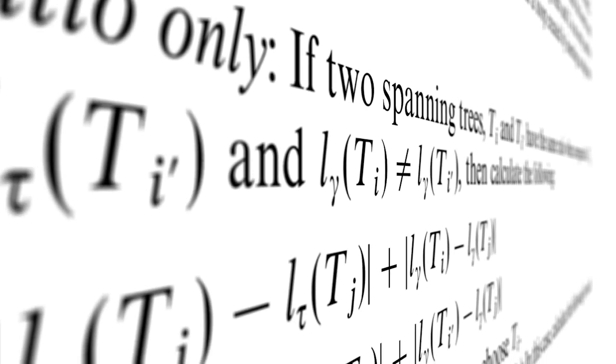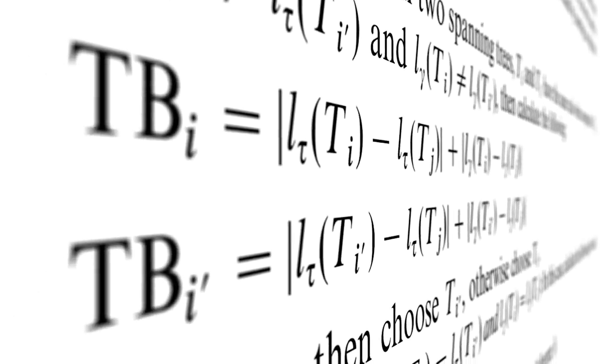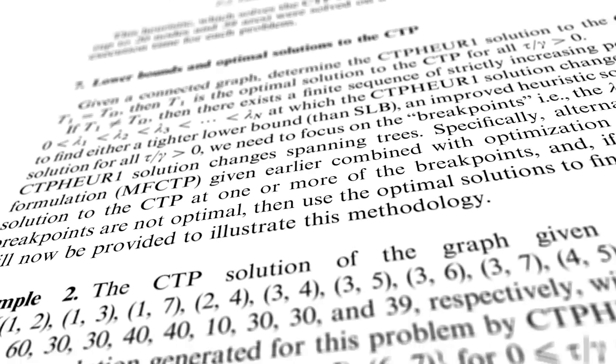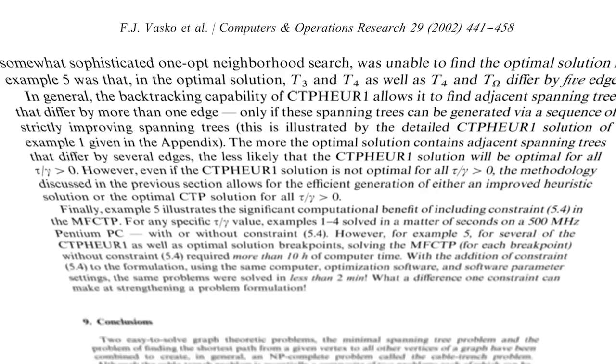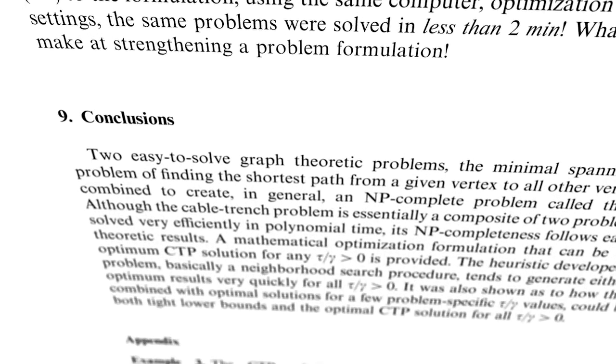Then from there, we find the next best one as the cost starts to increase. And it's an iterative procedure until you get to the minimum spanning tree, which you know you're at the other extreme.